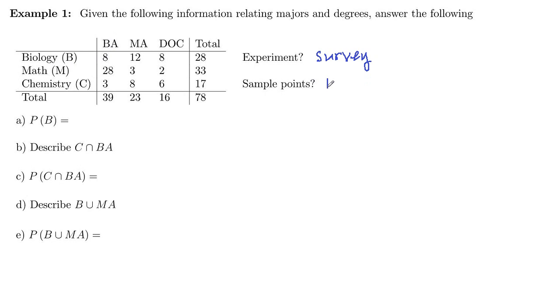The sample points would be these combinations here: biology BA, biology MA, and so on. So we've got biology doctoral, math BA, math MA, math doctorate, chemistry BA, MA, doctorate. Those are our sample points.